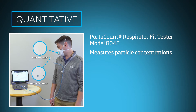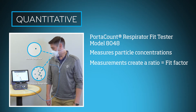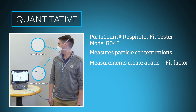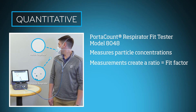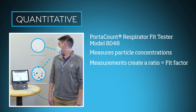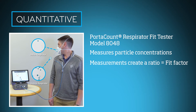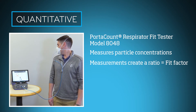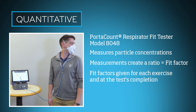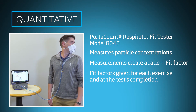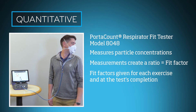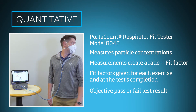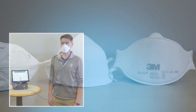Those two measurements create a ratio called a fit factor. Measurements are taken continually throughout the test, and a fit factor is calculated for each exercise and at the completion of the test. This final fit factor is compared to established guidance for respirator types, resulting in a passed or failed fit test.